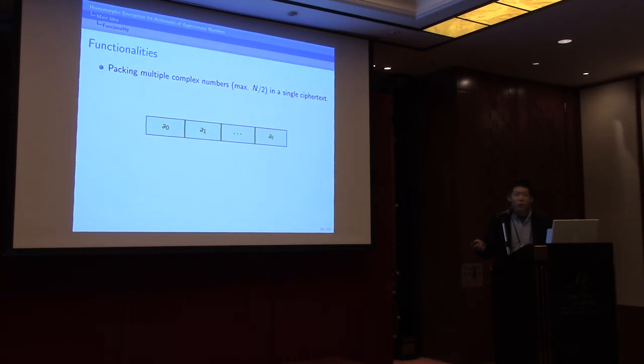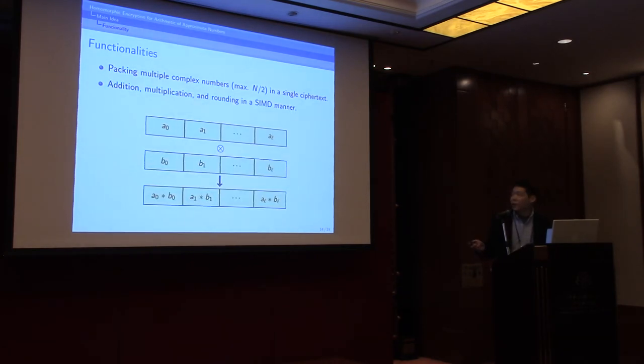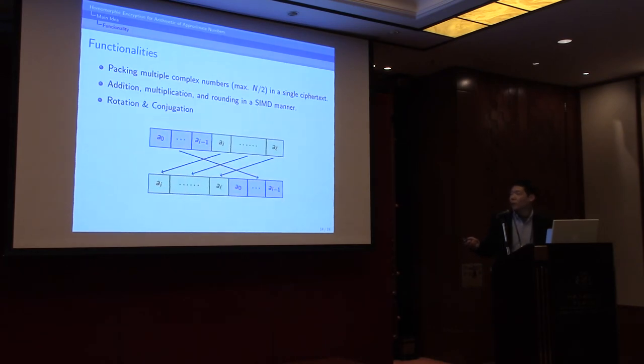As a summary, you can store N over 2 complex numbers in a single ciphertext and perform addition, multiplication, and rounding in a single test. You can set the amortized time for computation, and it allows rotation and element-wise conjugation.